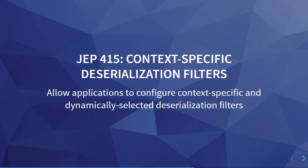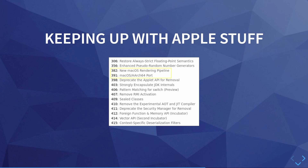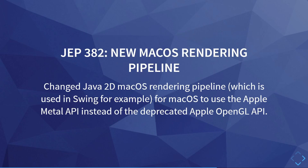In the third category, we have two JEPs that are Apple-specific. The first one, JEP 382, is a Java 2D rendering pipeline that uses the Apple Metal API instead of the deprecated OpenGL API. This is used in Swing, for example, and the new Metal API is more performant in some areas. The other JEP has to do with Apple Silicon and ports the JDK to their new ARM64 architecture.